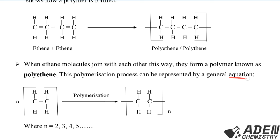This polymerization process can be represented by a general formula or general equation. For ethene, we have n monomers, where n is the number of monomers. Through the polymerization process the double bond breaks up, giving four hydrogen atoms — two up and two down — enclosed in brackets with n outside. Here n equals two, three, four, five — in other words, n equals the number of monomers.